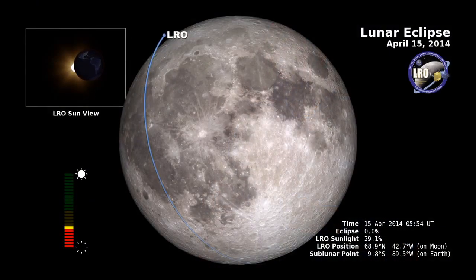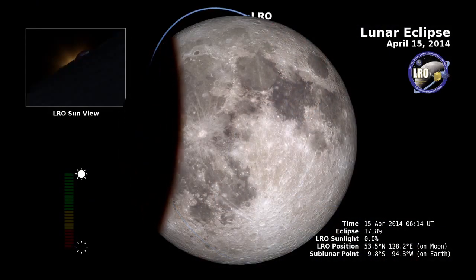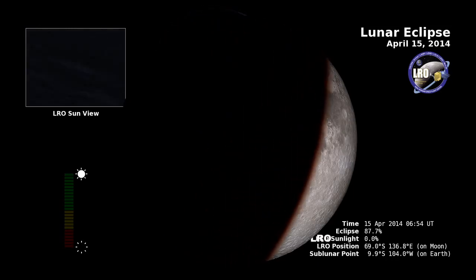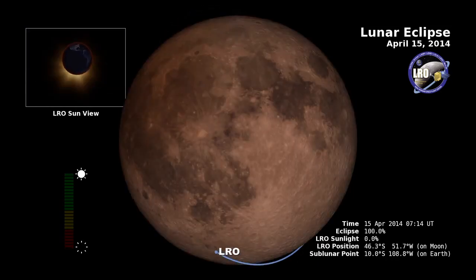So the eclipse is going to affect LRO in one very important way. LRO's batteries are charged by solar energy, and so during an eclipse, the moon and the LRO spacecraft are going to be in darkness for a very long period of time, so the battery won't get to be charged. So we're going to be turning off all of the instruments in LRO so we don't drain the battery.